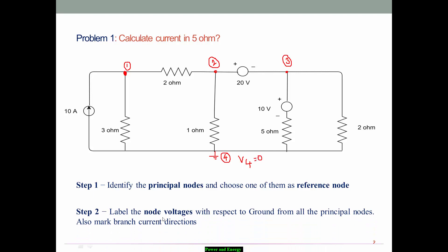Step number two: label the node voltages with respect to ground for all principal nodes, and also mark the branch current directions. This is the reference node. The voltage at node number one is V1, the voltage at node number two is V2, and the voltage at node number three is V3. At node number one, three branches are connected. One branch already has a current direction — this is I1. I will randomly choose directions for the others: this is I2 and this direction is I3.